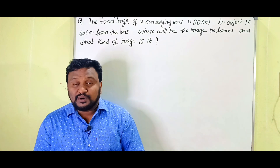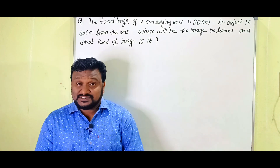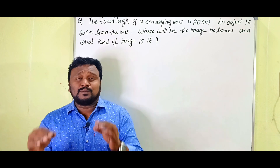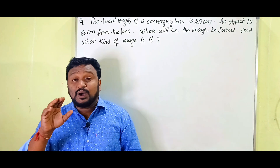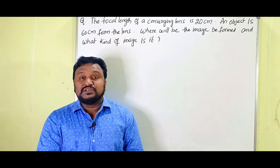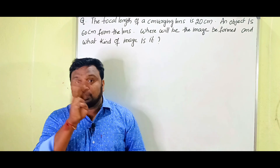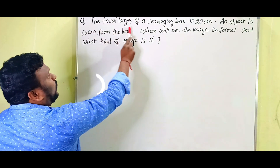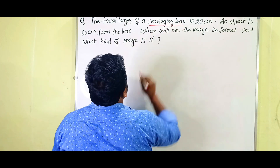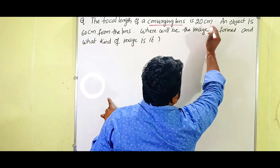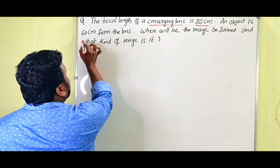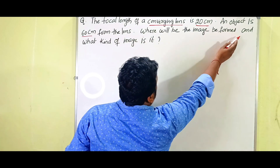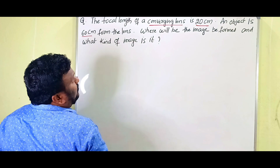Welcome back to our channel, Vinay Kumar Basics of Physics. In this video we are going to discuss one of the most important problems on the convex lens. In examination point of view it will be given for four marks. The question is: the focal length of a converging lens is 20 centimeters and an object is 60 centimeters from the lens — where will the image be formed and what kind of image is formed?